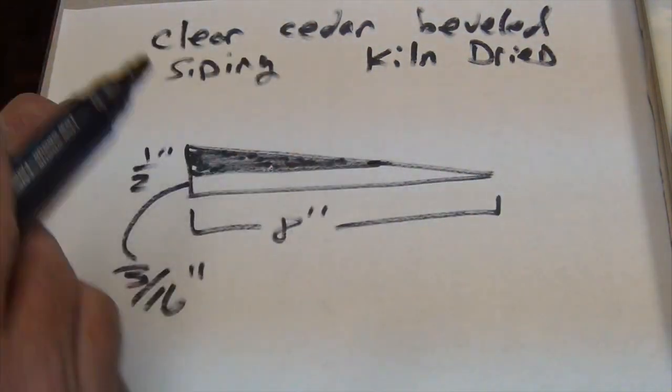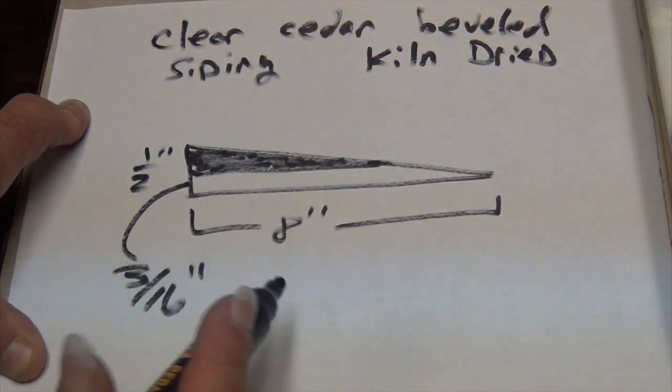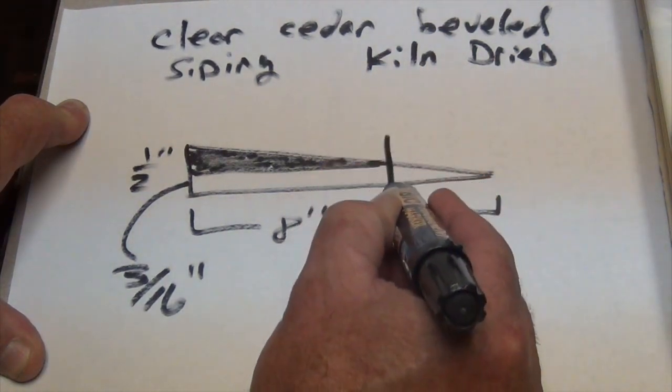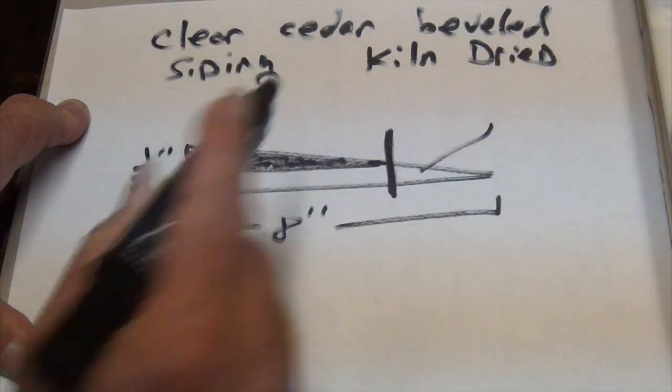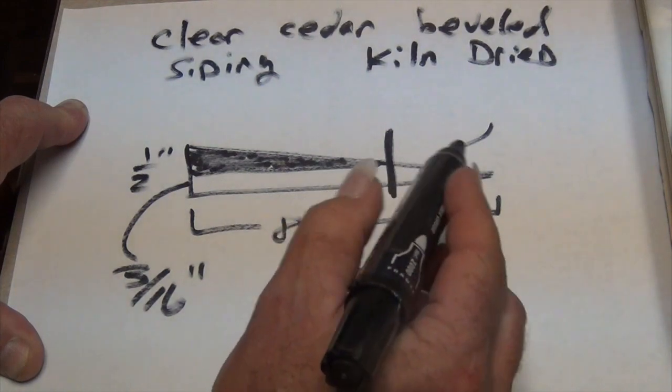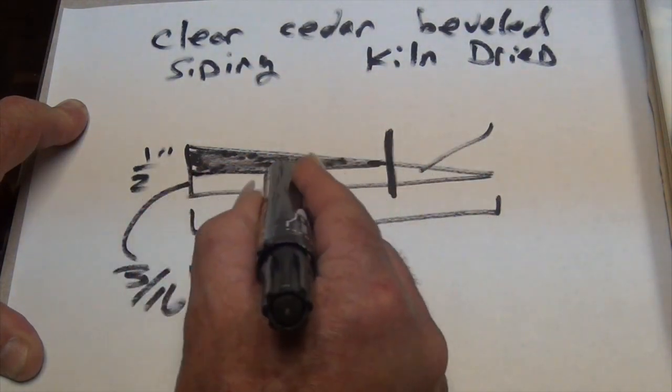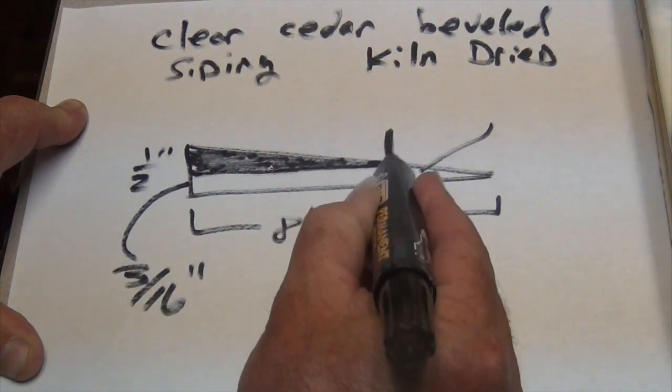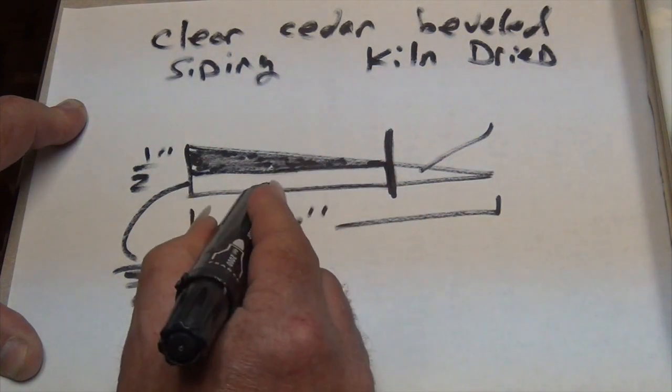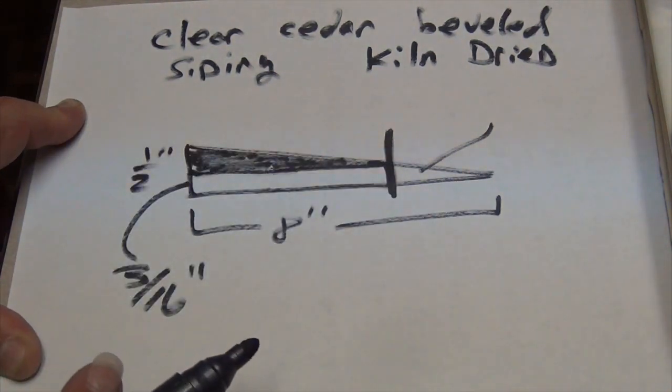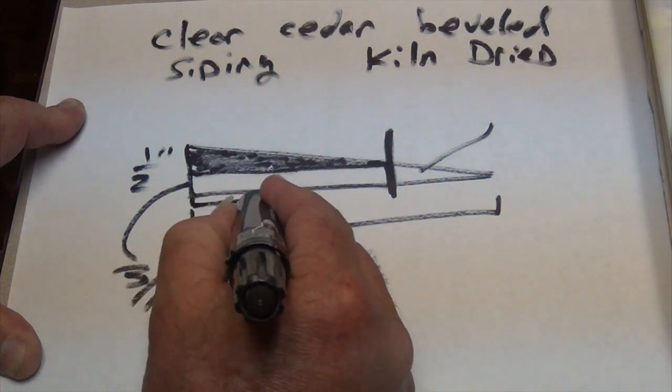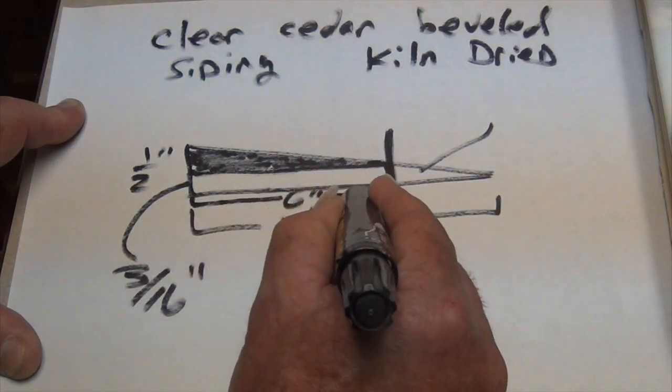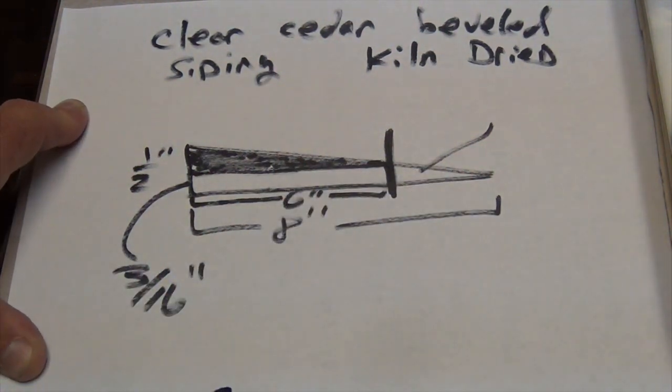Then you run it down its length through a table saw to cut here. You throw away this triangular piece, and that leaves a board that's uniformly three-sixteenths thick throughout - about six inches wide and eight to ten feet long.